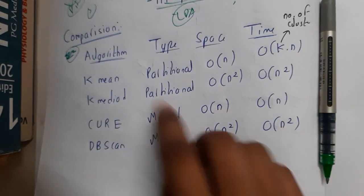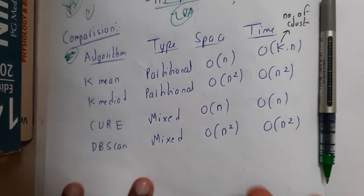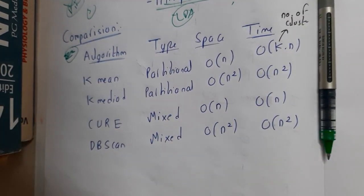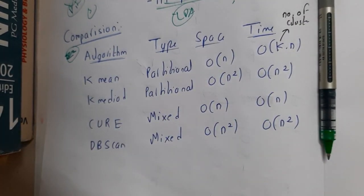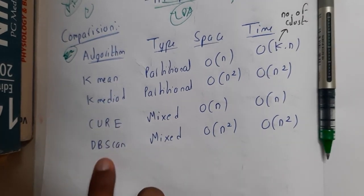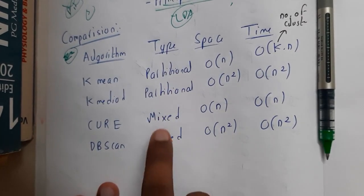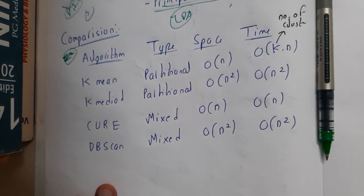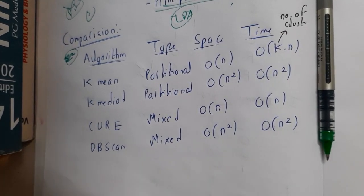After that, we have a small concept which is comparison. There is nothing much to explain in this comparison—it is just the time complexity and space complexity comparison between the algorithms which we have learned. Basically, we've gone through K-means, K-medoid, and DBSCAN. The time complexity you can remember them. I hope everyone got a clear idea about the whole subject, as this is the last lecture.